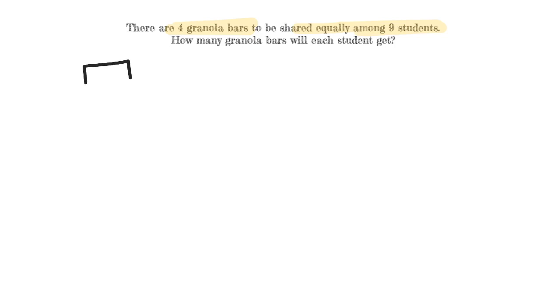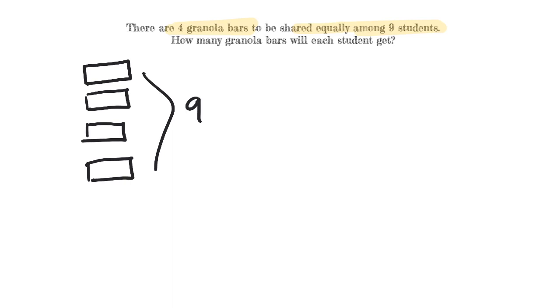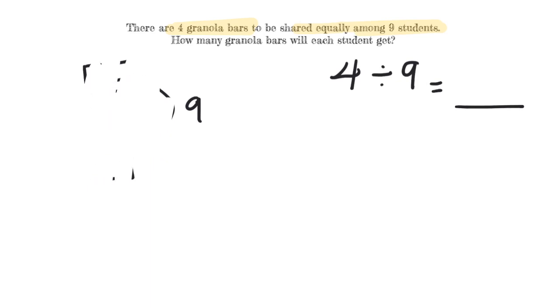You should have paused the video and written your answer. If I have four granola bars — I can even draw my four little granola bars here on the side — and I'm going to share them equally with nine people, that would be four granola bars divided by nine. I'm going to draw them a little bit bigger so we can actually see the work being done.